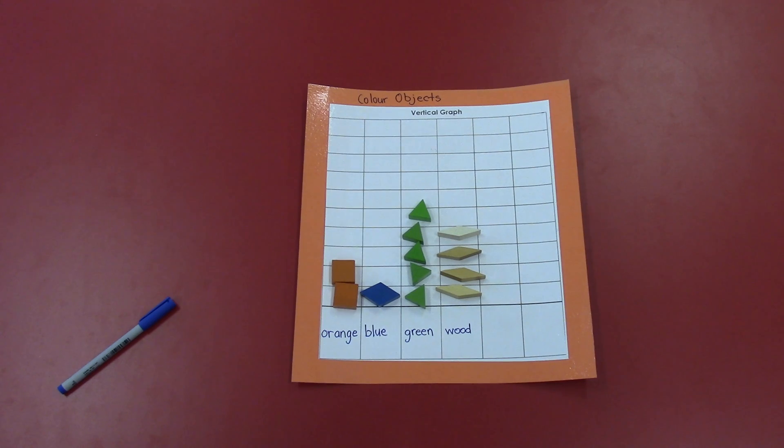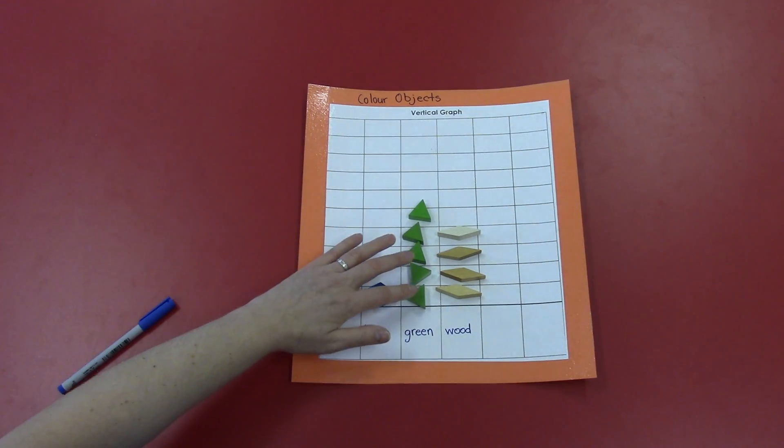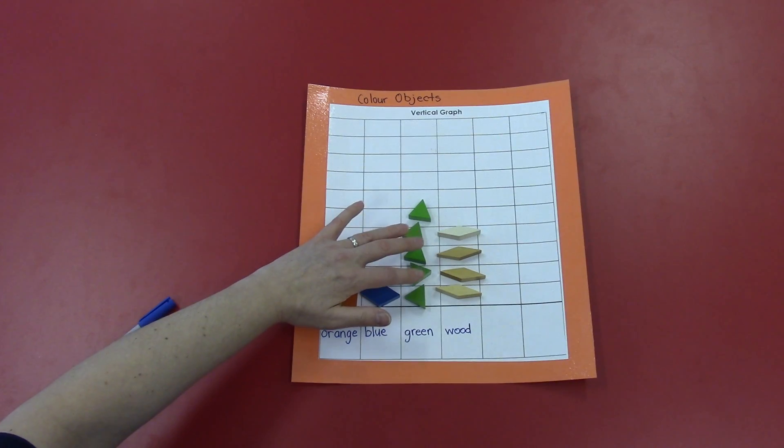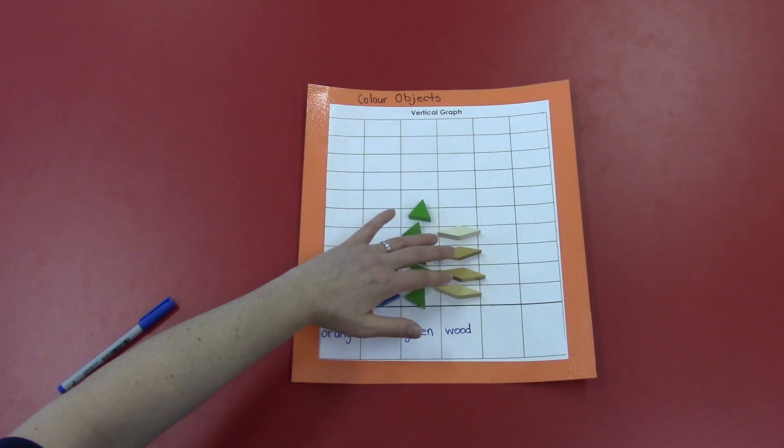I notice that I have more green than anything else. I notice that there's only one blue object. I also can tell how many there are all together. I'm going to start counting. I can see that there's five here, so I don't have to count that. And four.